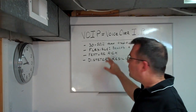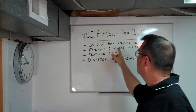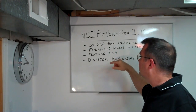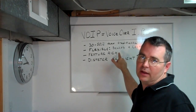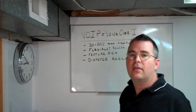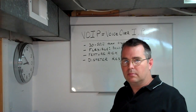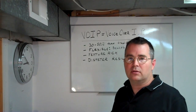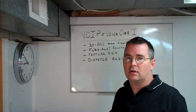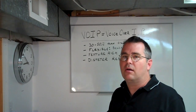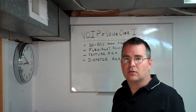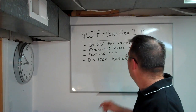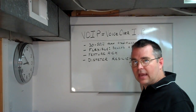Let's talk about the benefits. VoIP tends to be 30% to 50% less expensive than traditional telephone lines. It's very flexible — flexible in the way that it can be used on many different devices. It could be used on a telephone system, a house phone, an iPad, a smartphone, or a computer. And it's also flexible with its location.